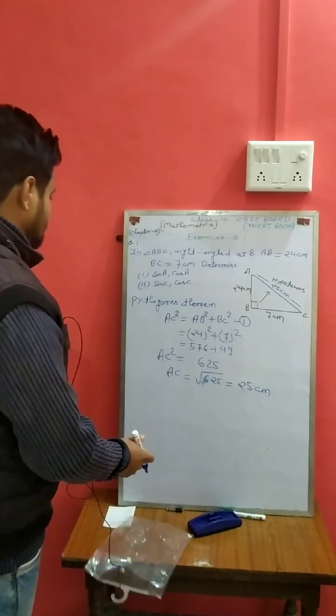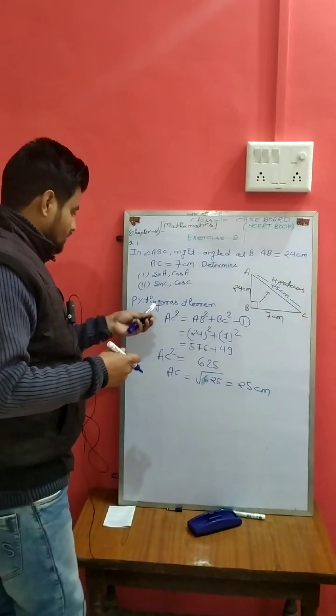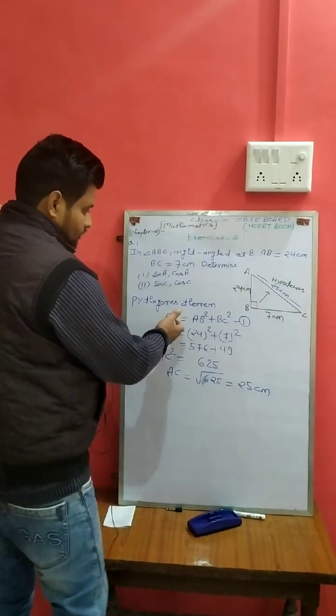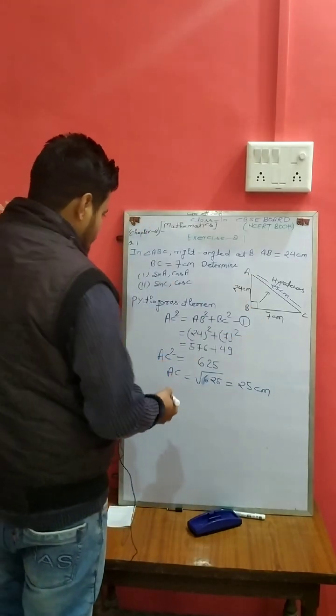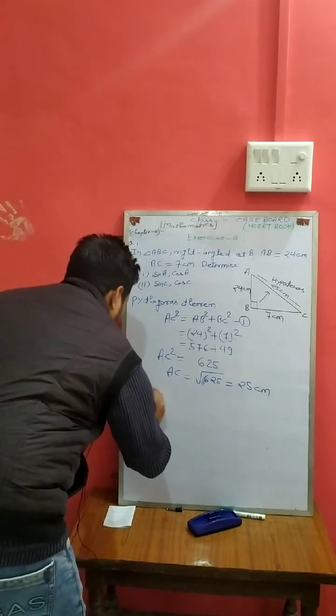So AC is 25 cm. This side is 25 cm. We use Pythagoras theorem: hypotenuse square equals sum of square of other two sides. So now, sin A.